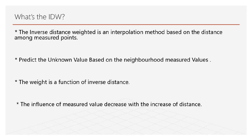So first, what is IDW? It's an interpolation method based on the distance among measured points. It predicts unknown values based on the neighboring measured values, where the weight is a function of inverse distance. The influence of a measured value decreases with the increase of distance — that means the farther the point, the less its influence.